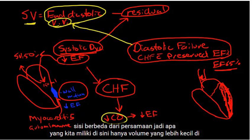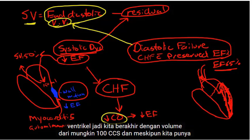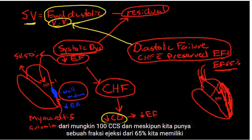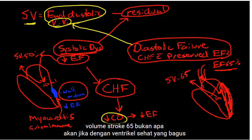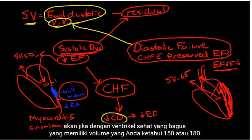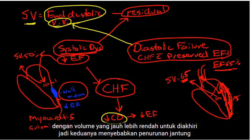With diastolic dysfunction we end up with smaller volumes in the ventricle — maybe 100 cc's. Even though the ejection fraction is 65%, we have a stroke volume of only 65. Compared to a healthy ventricle with a volume of 150 to 180 mLs, we have a much lower volume to start with and a much lower volume to end with. Both types cause decreased cardiac output.